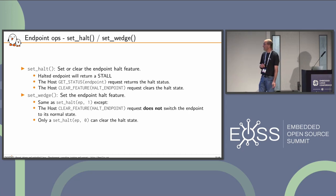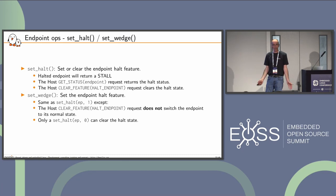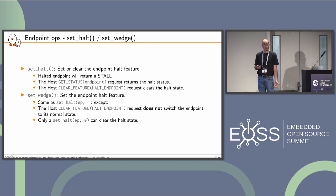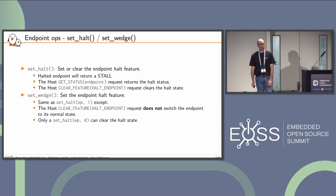Control operations include set halt and set wedge. Set halt sets or clears the endpoint halt feature. A halted endpoint returns STALL on transactions, indicating it cannot proceed. The host can use requests to get endpoint halt status and also to clear the halt feature. Set wedge is similar, except the host cannot clear the endpoint halt using the clear feature request — only the gadget core using set halt zero can clear the halt state.